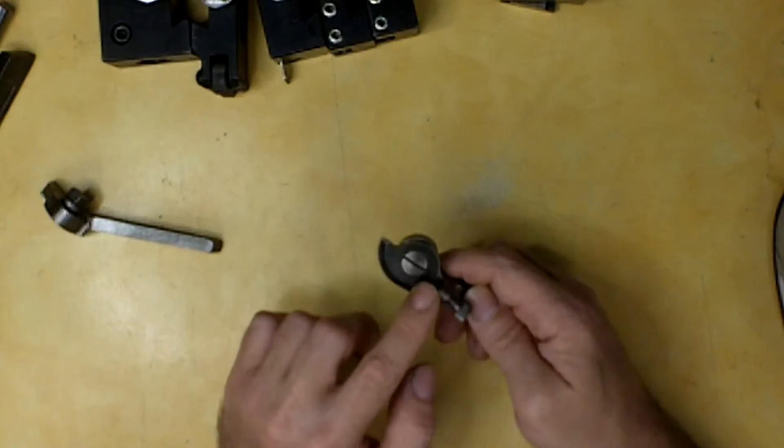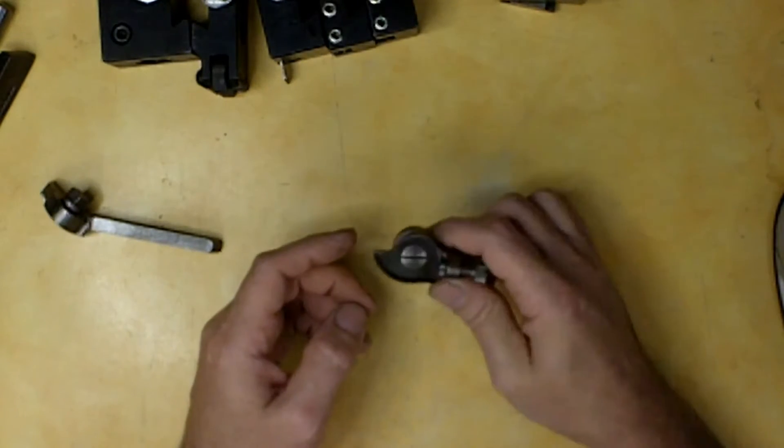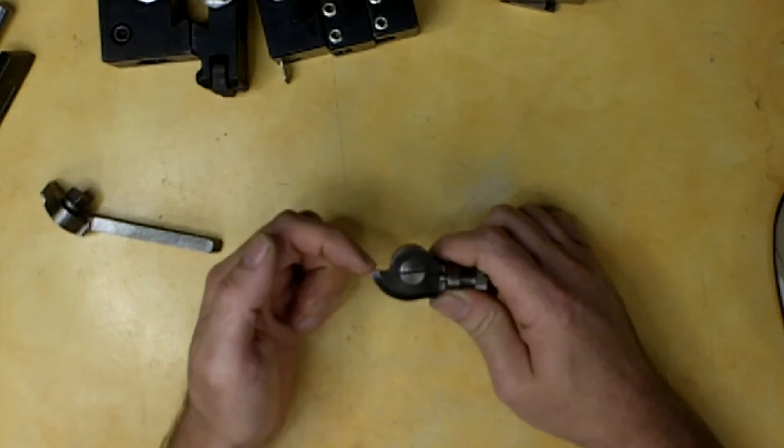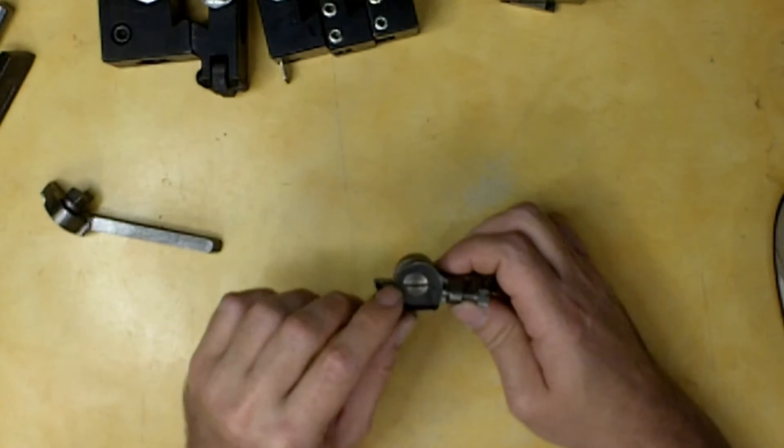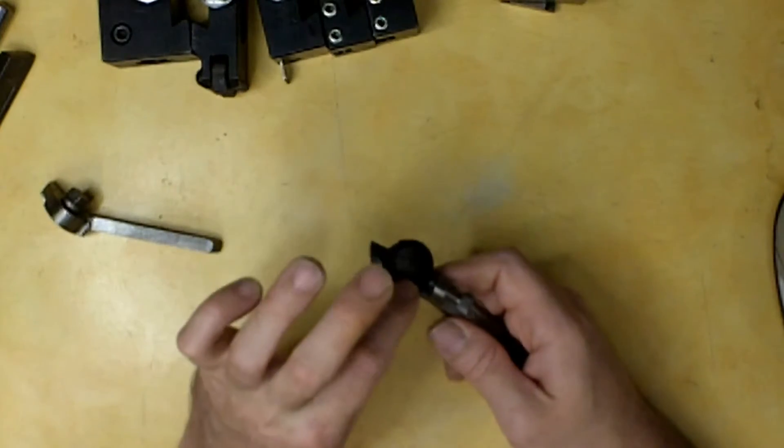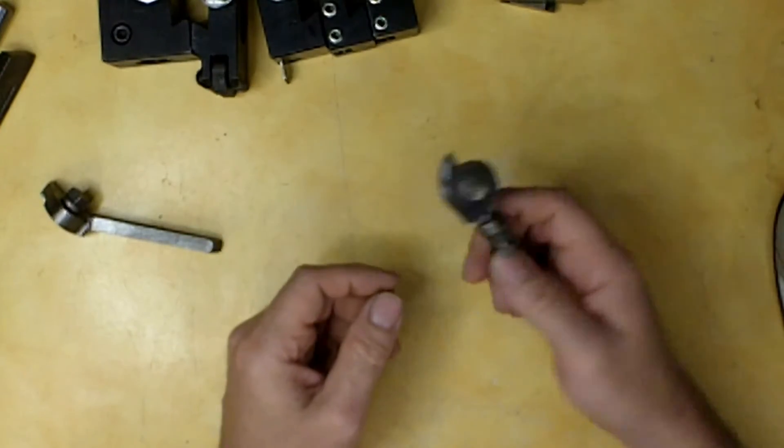The way that this blade is made here, the only thing you have to do to sharpen this is just flat grind the top of it and you can rotate this thing around till it's a nub. And you have all this area here to cut threads.